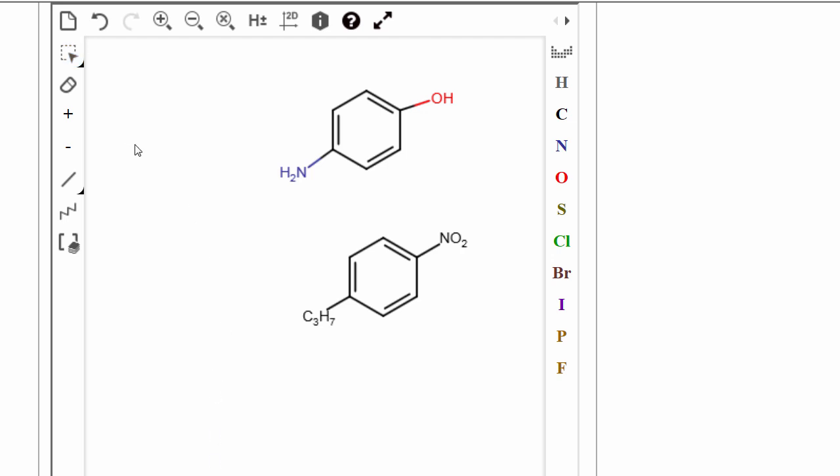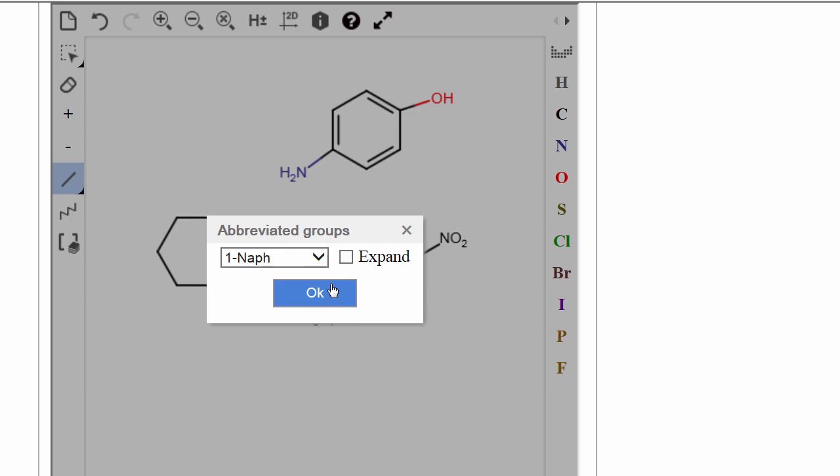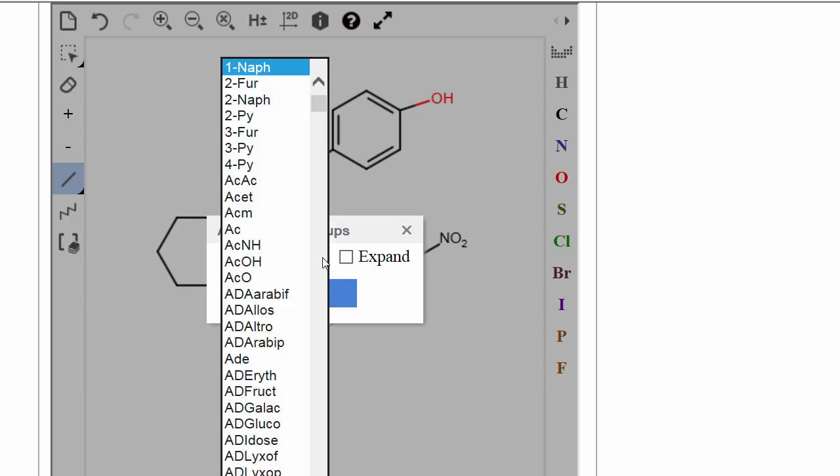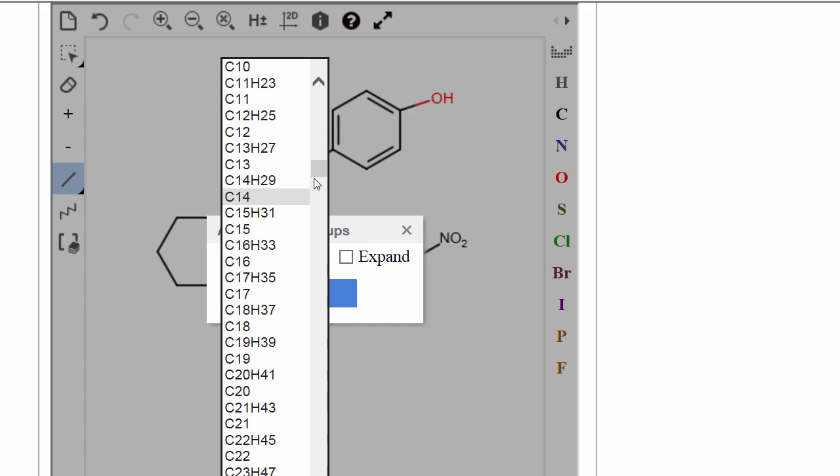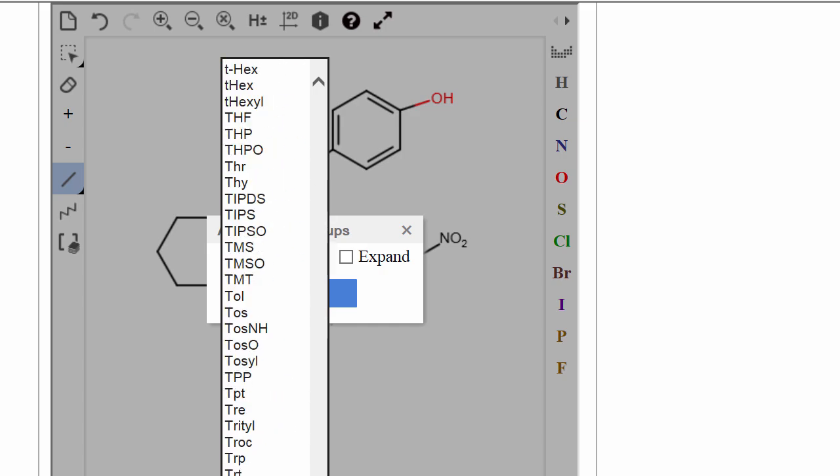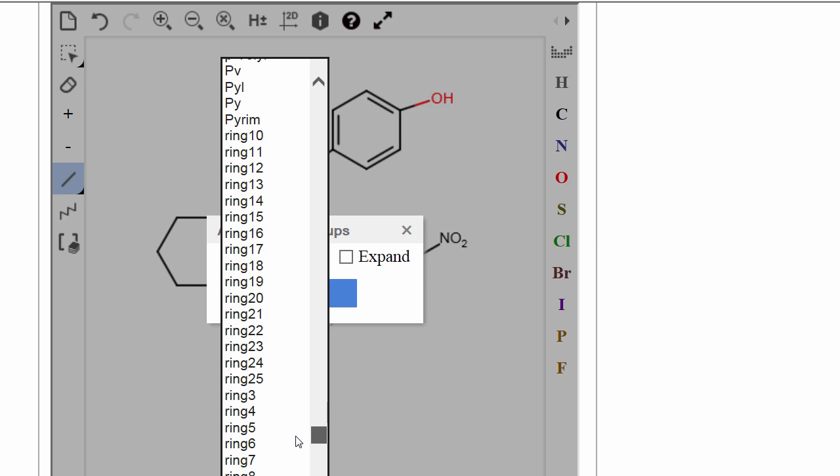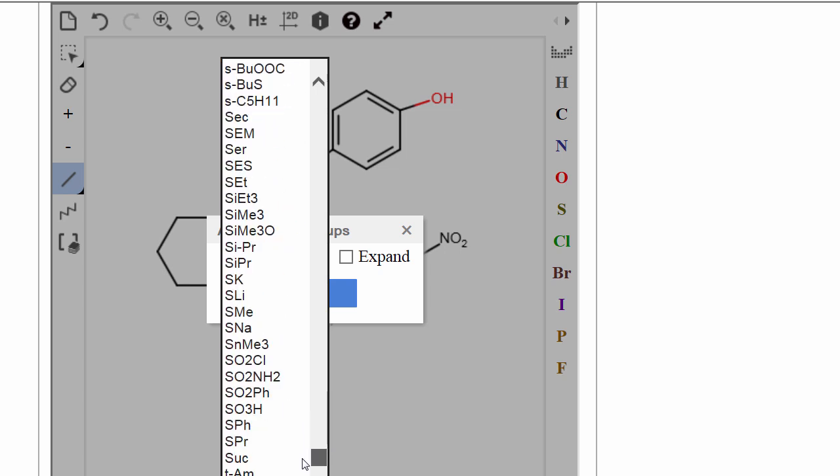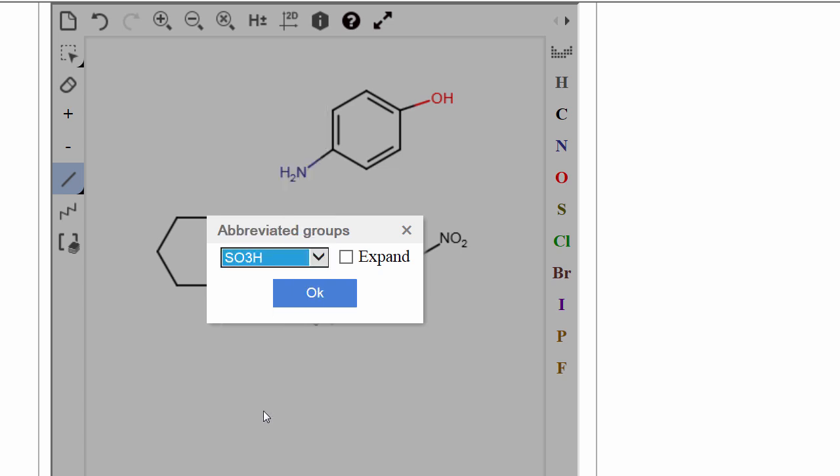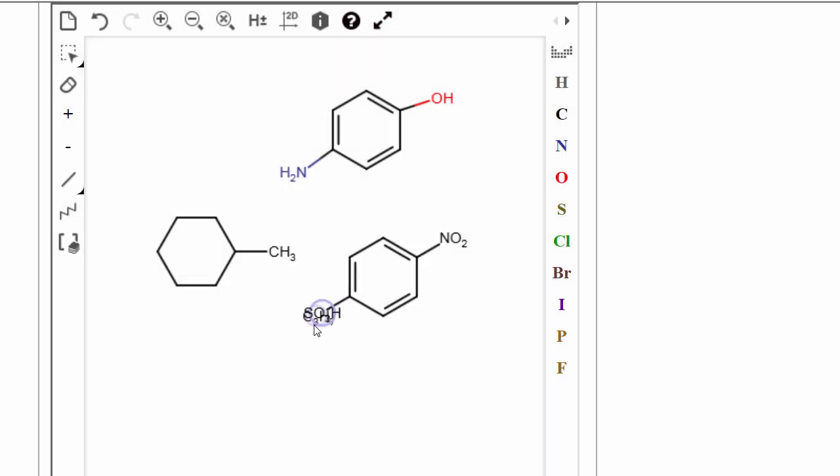Let's say in this case here, I'll put that there. Let's say I want to put one of those sulfur groups on here. Again, I just click. I'll go down here to the S's. Here's that sulfonic acid group. I could just replace that with that.